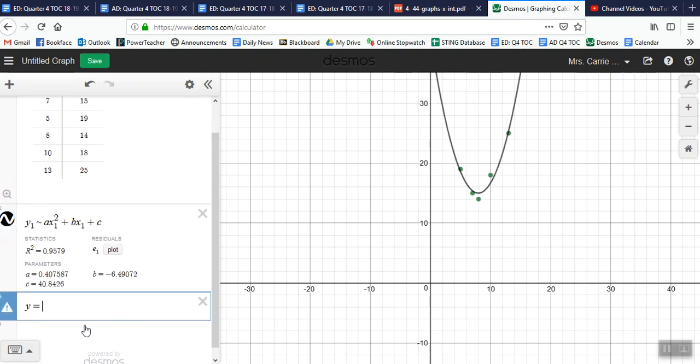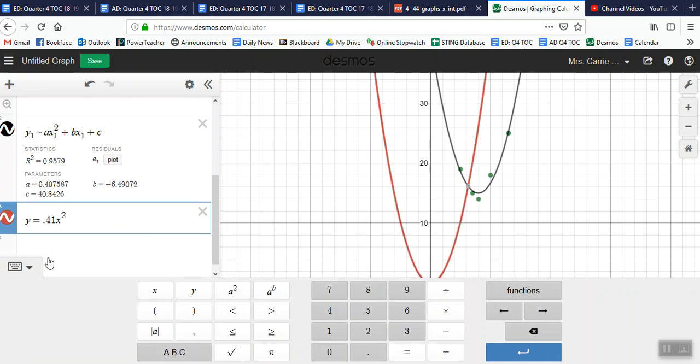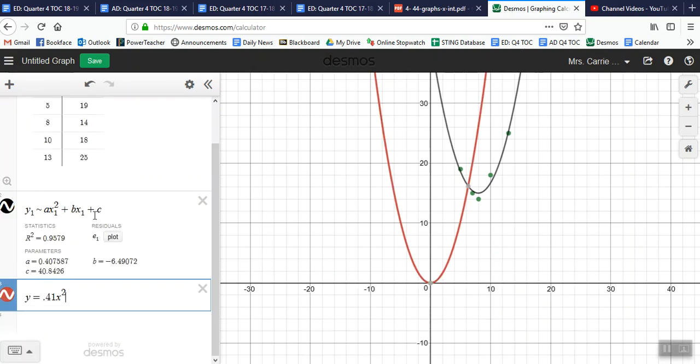It would be y = the a term - if I ask you to round to the hundredths place, would be 0.41. So it would be 0.41x² minus the b term 6.49x plus 40.84.